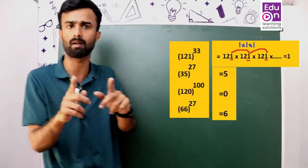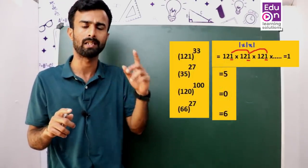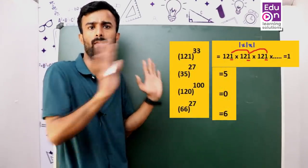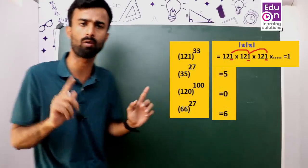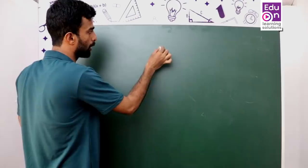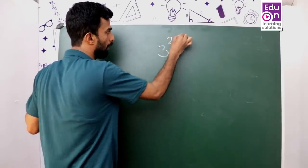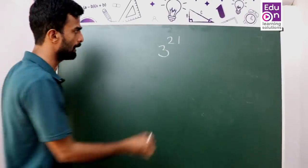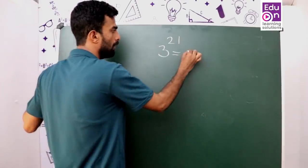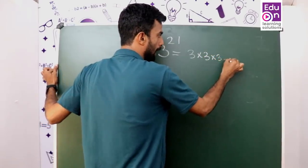So the fixed unit digits are: 0, 1, 5, and 6 — these never change regardless of the power. The other numbers are the ones that create the pattern variation. Now we look at 3 raised to 21. What is the meaning of 3 raised to 21? It means we multiply 3 a total of 21 times.